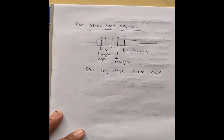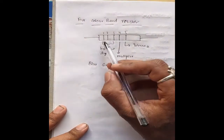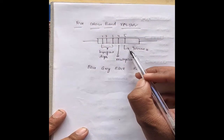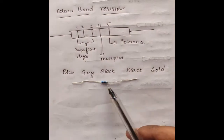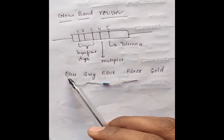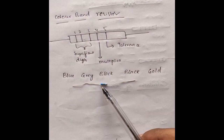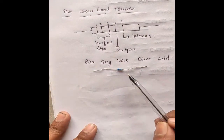Now we are going to calculate a five band resistor. For a five band resistor, bands one, two, and three are significant digits, the fourth is the multiplier, and the fifth is tolerance. We have a five color band resistor with a blue base color, and the colors are blue, gray, black, black, and gold.